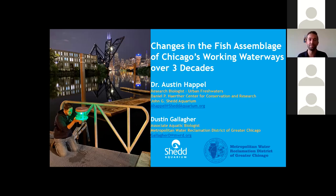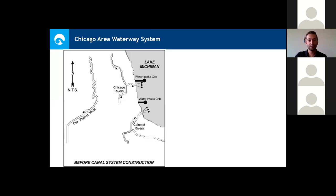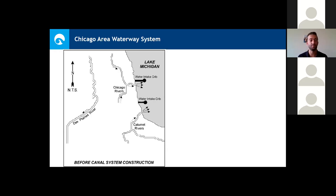I'm going to talk about some of the changes to the fish assemblage we've seen in Chicago over the past three decades or so. Chicago was built around the Chicago River. At the time, it flowed out into Lake Michigan. The city expanded down to the Calumet Rivers, which also flowed out into Lake Michigan, and then headed west towards the dust plains and out towards the Mississippi. At the time, we could use these rivers for drinking water and sewage transportation, but then we started pulling water for drinking from Lake Michigan.